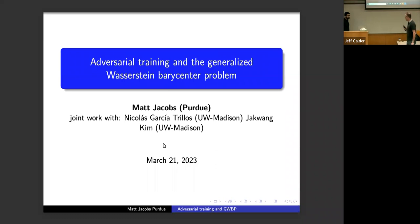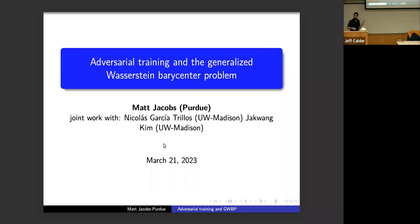Thank you so much for having me. Today I'm going to talk about adversarial training and the connection we found between adversarial training and what we're calling the generalized Wasserstein-Barycenter problem. We're going to have some classes, find a Barycenter in Wasserstein space, and relate this to adversarial training. This is joint work with Nicholas Garcia-Trios, who's at Madison, and his PhD student Jaquan Kim.